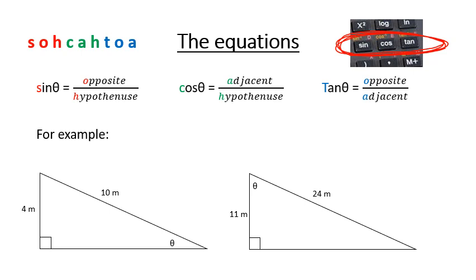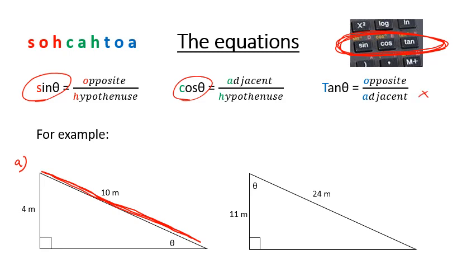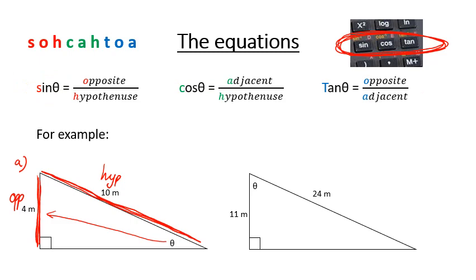If you are given a problem — looking at our first example here, call this A — we know we've got a length that's the hypotenuse, so we're going to look at using a formula that has hypotenuse in it. That means we could be looking at sine or cosine, because the tan formula does not have a hypotenuse in it. We also know that the length opposite theta is the opposite, so we're looking for a formula that has the opposite and the hypotenuse in it. The sine equation has our opposite and our hypotenuse, so that's how we know we would use that equation.